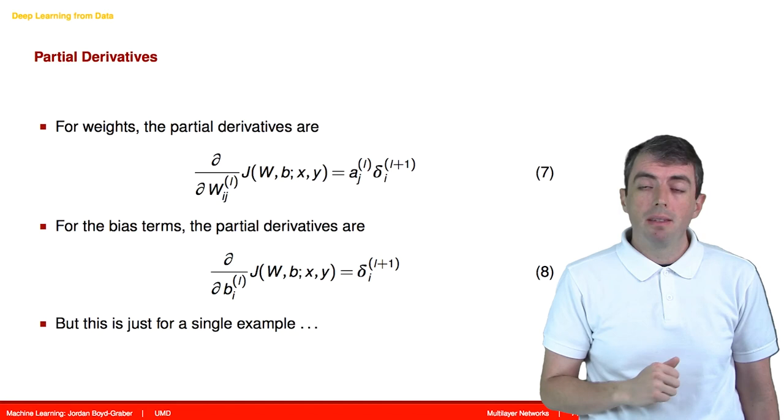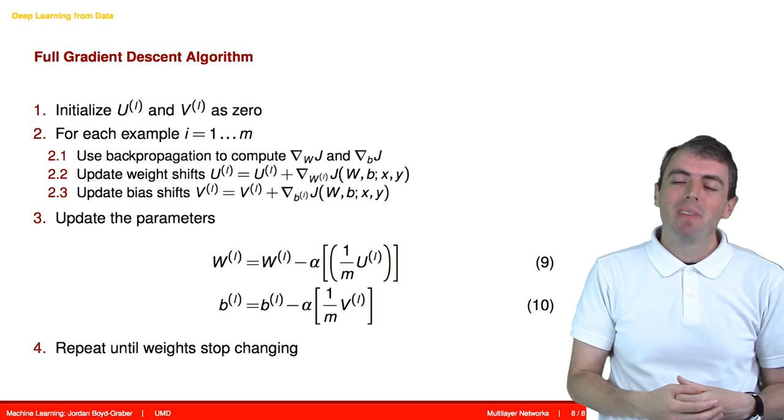So now we have a complete algorithm. We can take the individual errors, turn them into gradients, and now we know what direction we need to move our parameters to decrease the error.